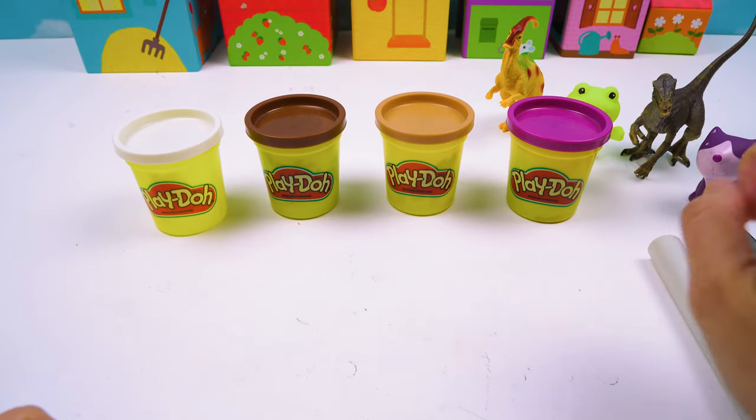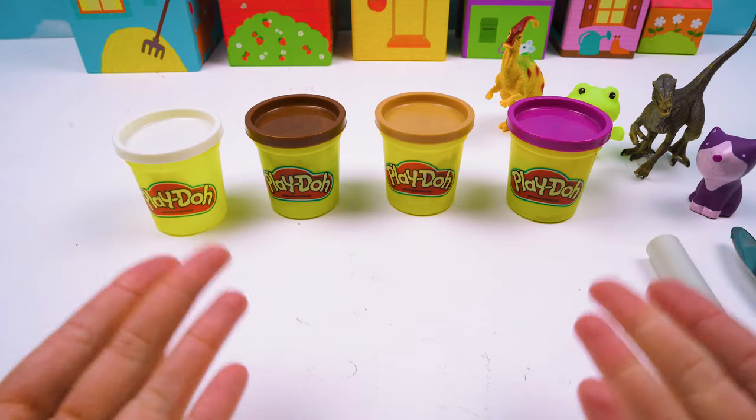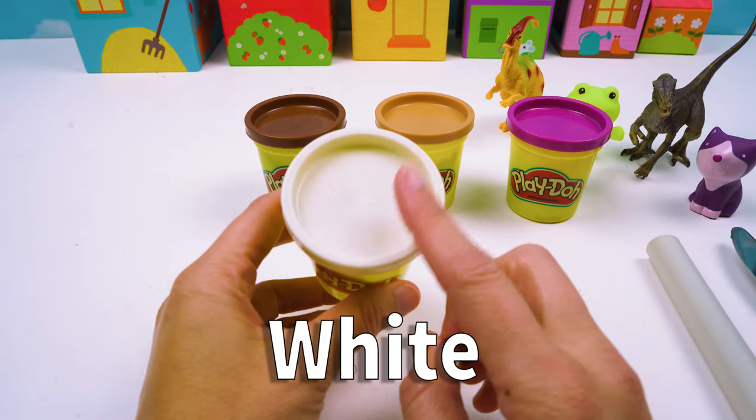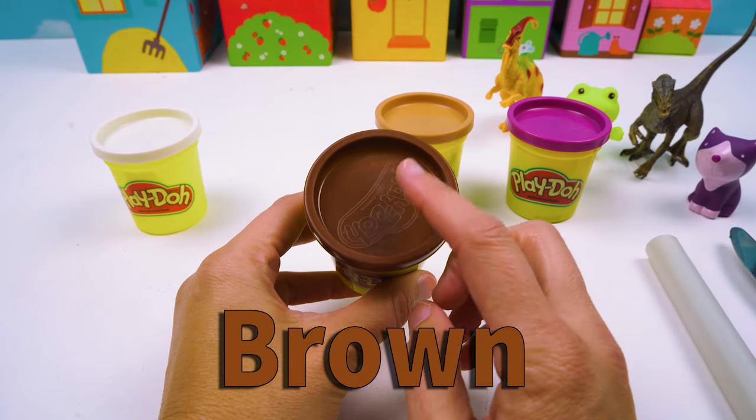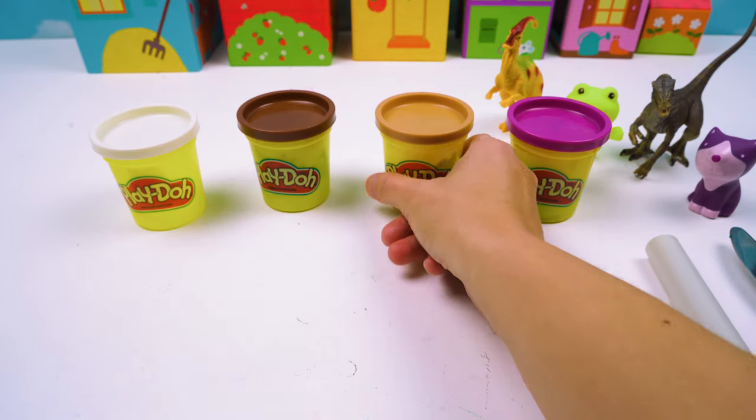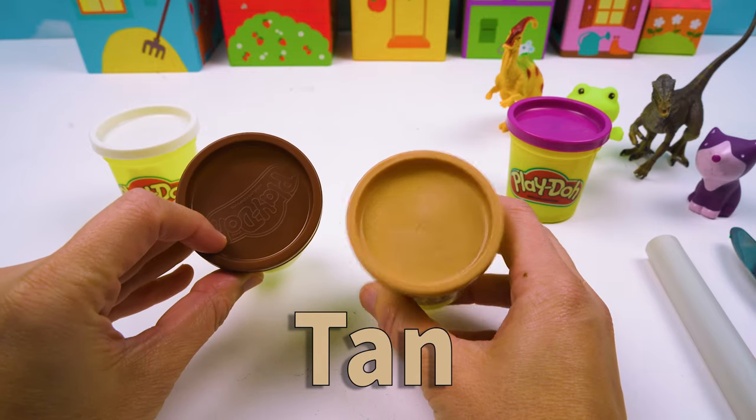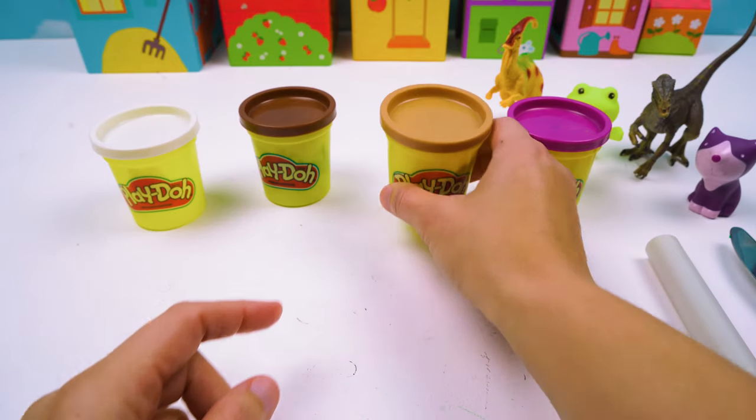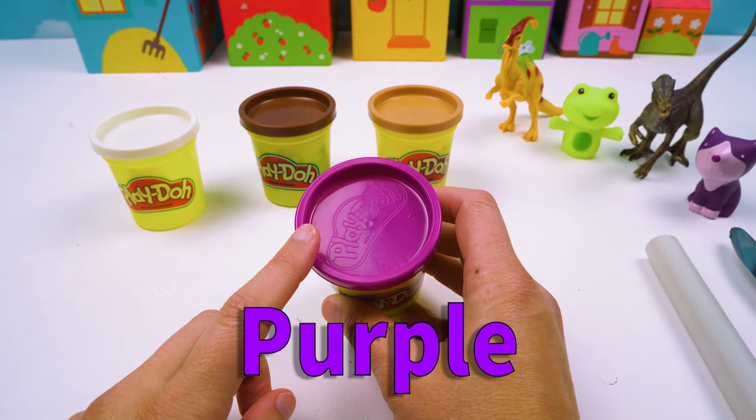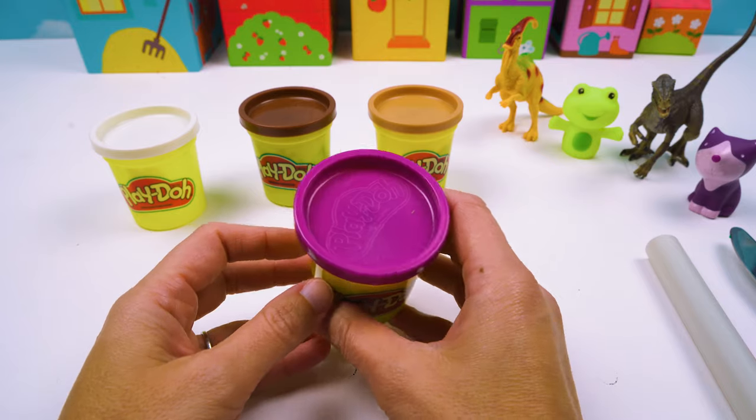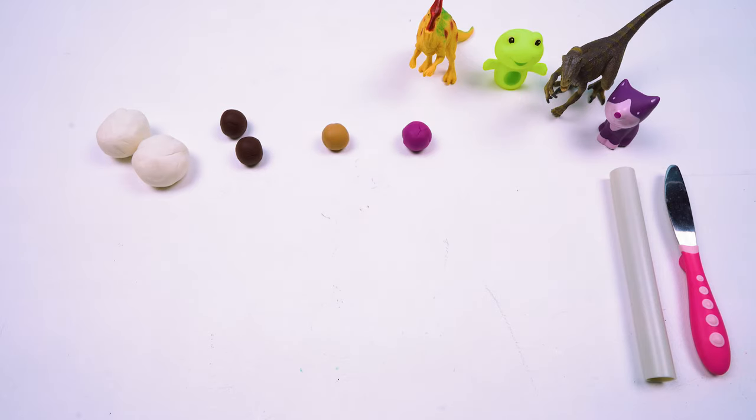All right friends, let's make these friends a peanut butter and jelly sandwich. So the colors we're going to use today are white, brown, tan which is also like brown it's just lighter, and we're going to use purple to make grape jelly. Ooh, I love grape jelly.